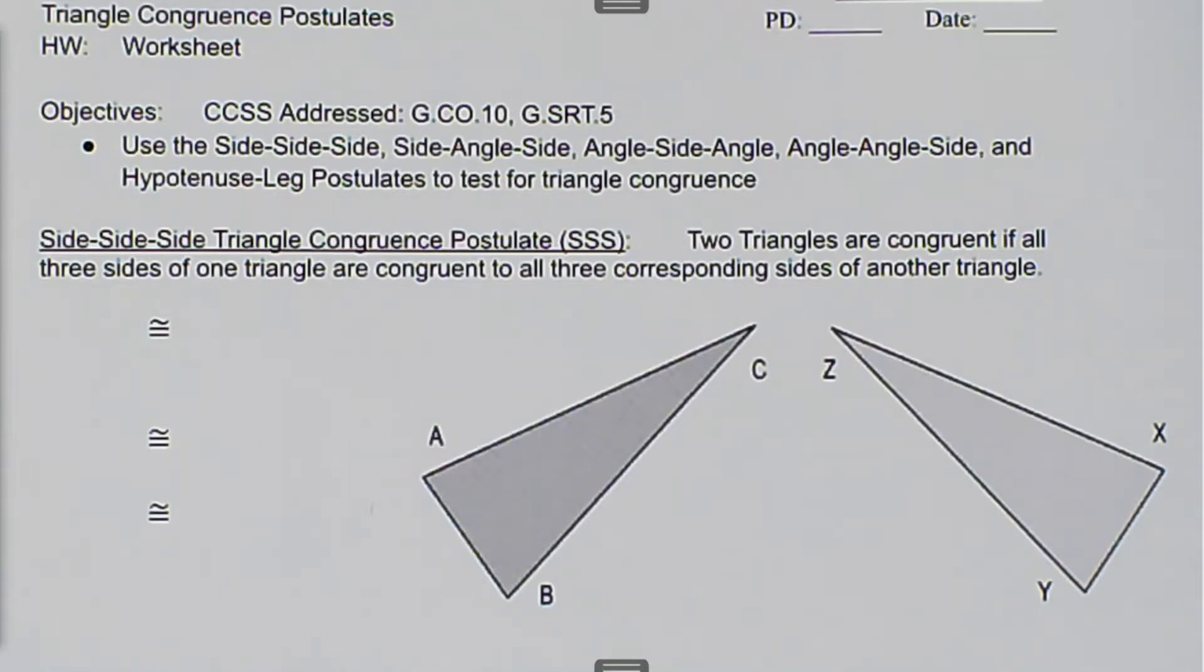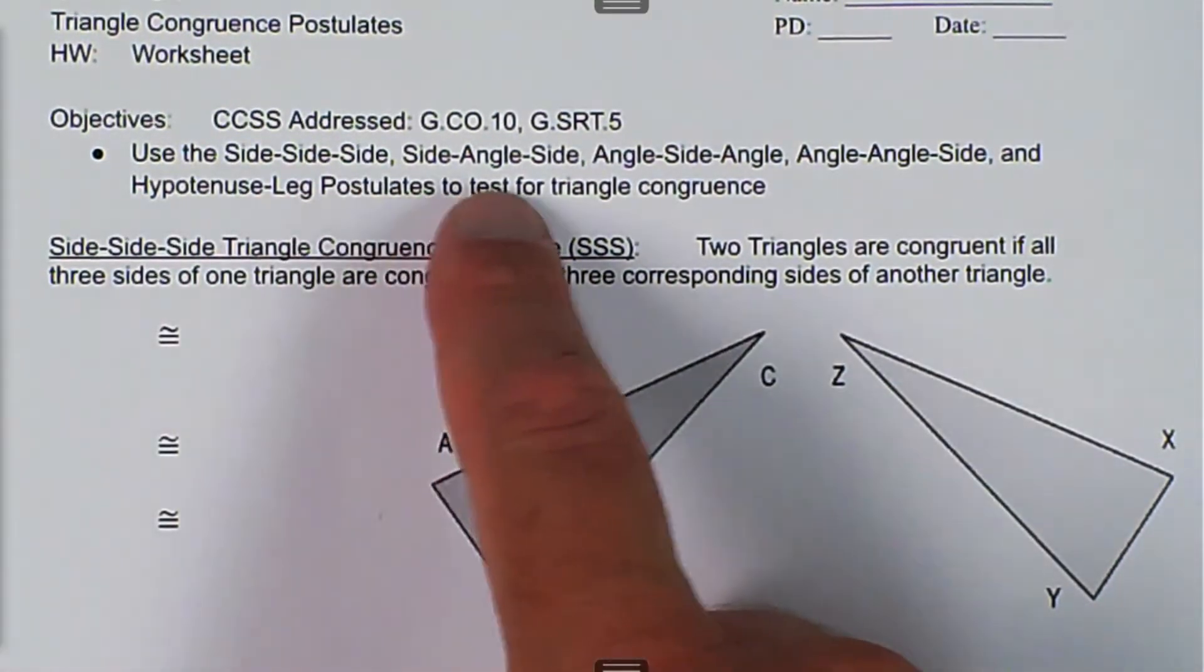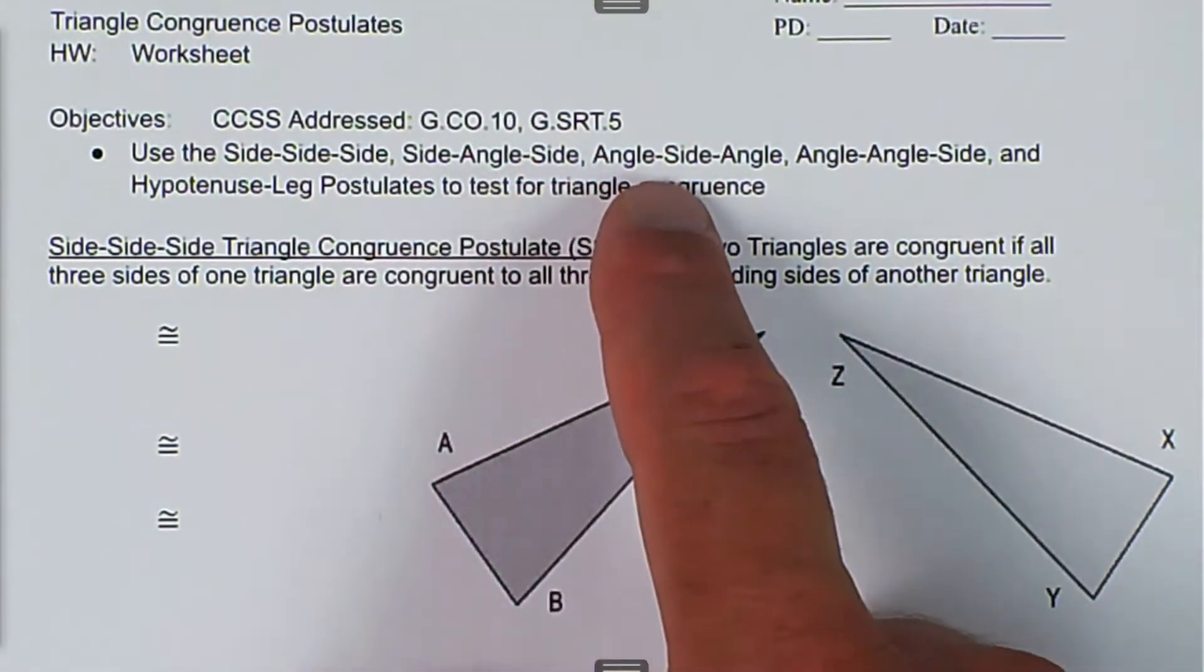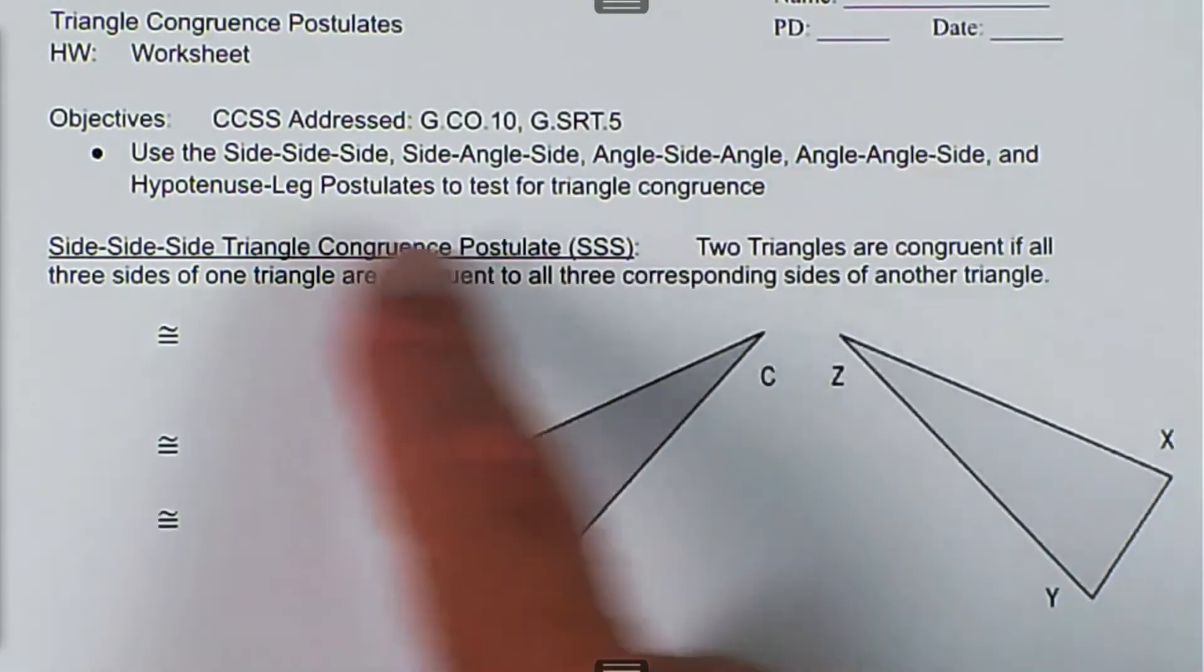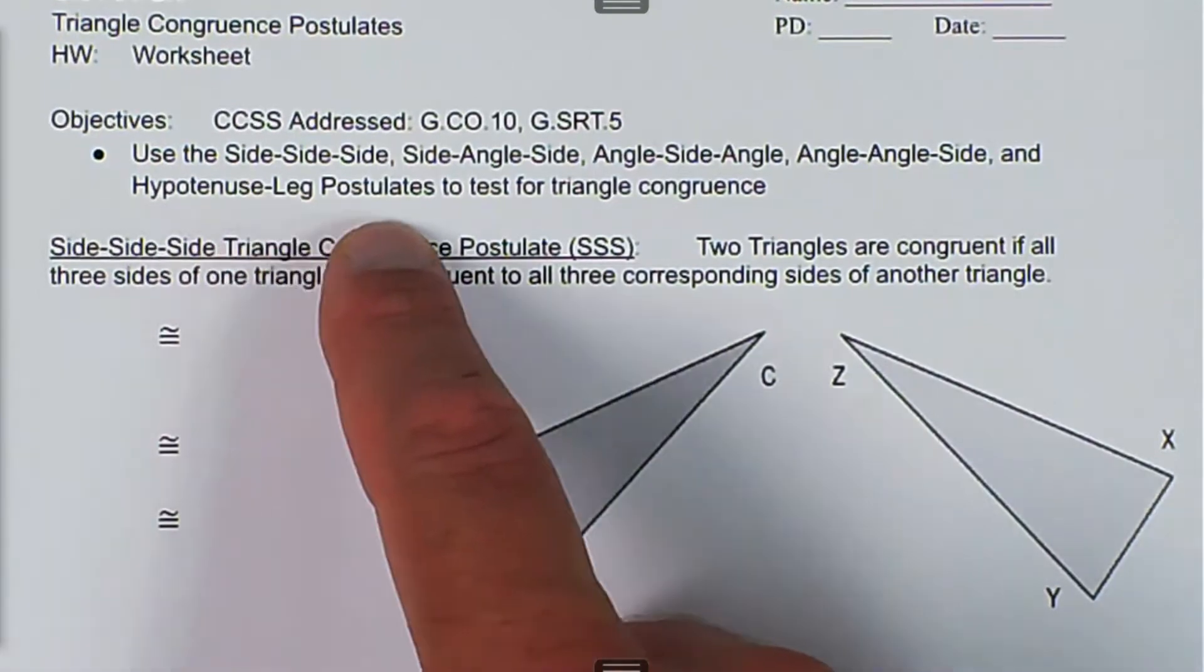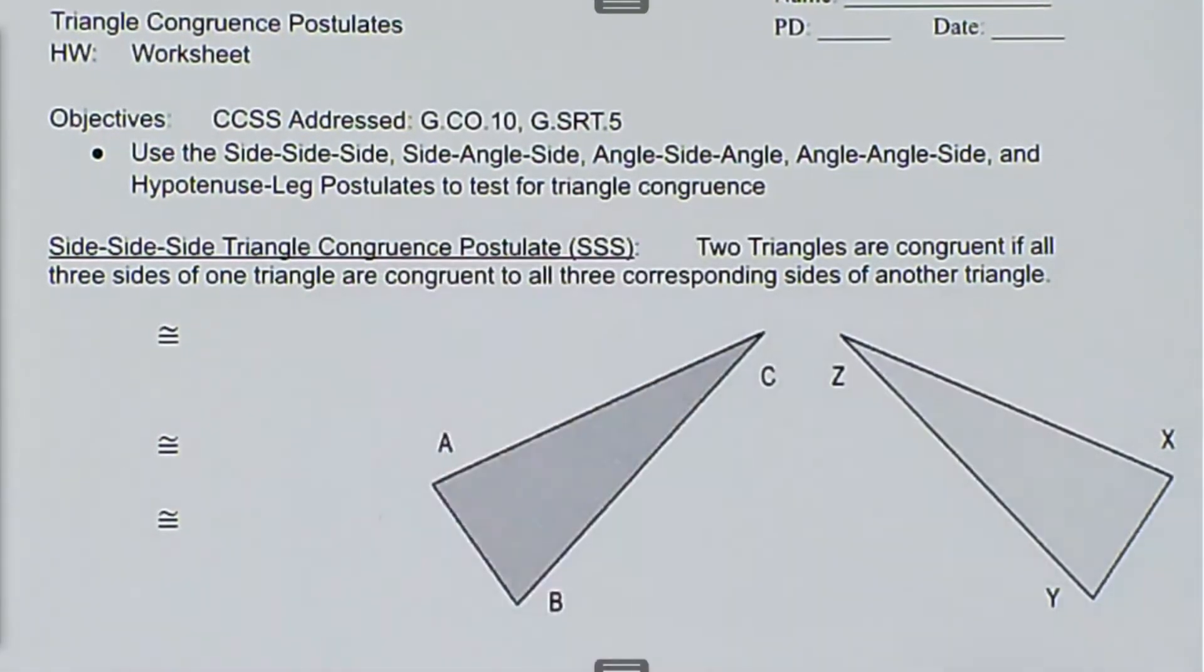We are talking about triangle congruence postulates, and we want to use the side-side-side, side-angle-side, angle-side-angle, angle-angle-side, and hypotenuse-leg postulates to test for triangle congruence. We'll go through an example of each one of those.